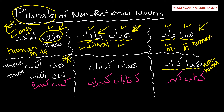Now for non-human, let's do the demonstrative. Haada kitab — this book. Haada is singular, kitab is singular, and both are masculine. Hadan kitaban — these two books. We change haada to hadan as a dual noun, and kitaban means two books. Then we go back here: hadihi al-kutub.